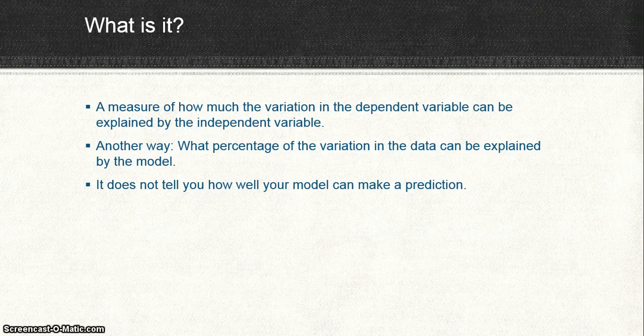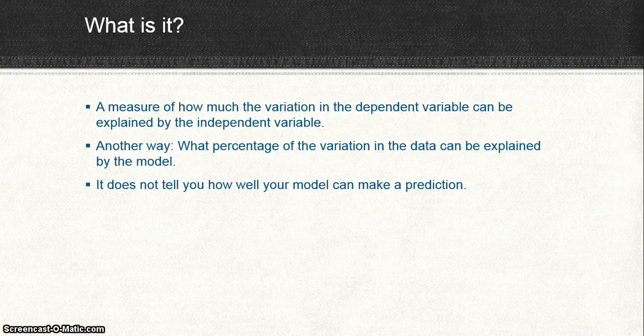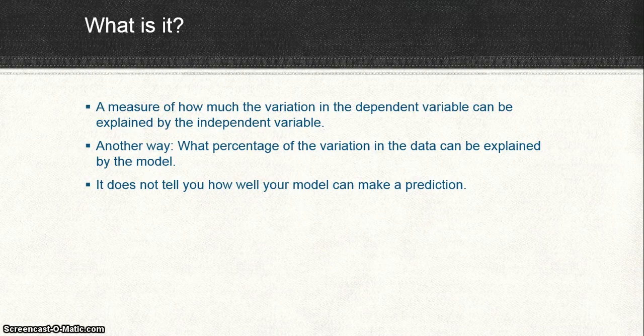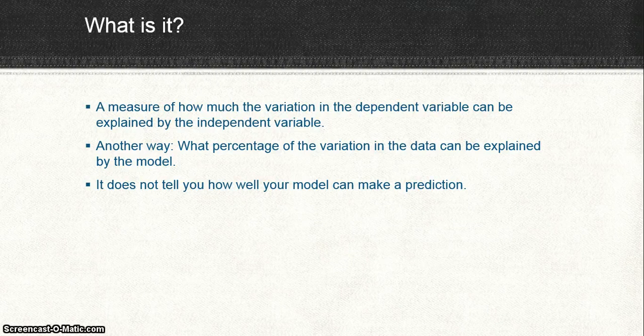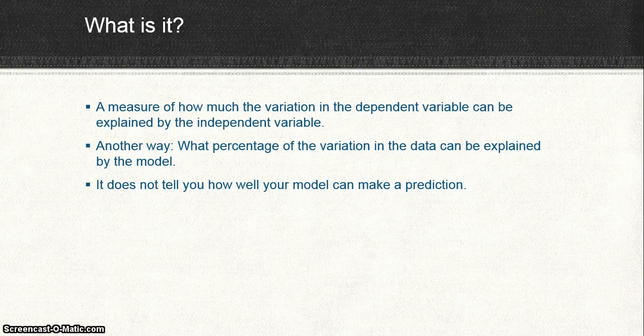In statistics, there are many sources of variation. There's variation due to blocks, there are variations due to treatments, and those are things you want variation in. What you don't want variation in is the error, which is a whole other subject. But the point is, the r squared would tell you how well your model or your experiment explains the pattern you get.